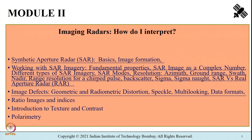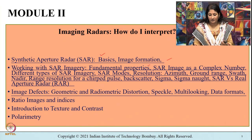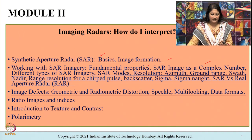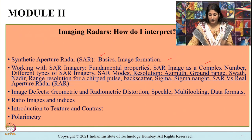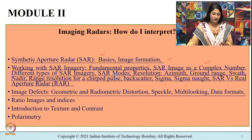In front of you is a summary of the topics covered: what is synthetic aperture radar, image formation basics, fundamental properties of SAR imagery, the fact that a SAR image can be a complex number, different types of SAR imagery, acquisition modes, the meaning of resolution, azimuth, ground range, terminologies like swath and nadir, sigma naught, and SAR versus real aperture radar.